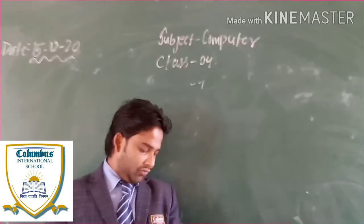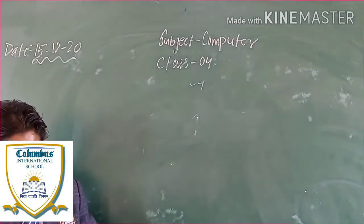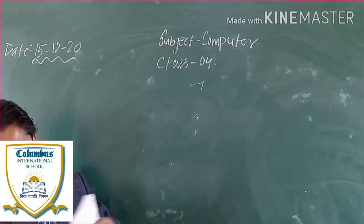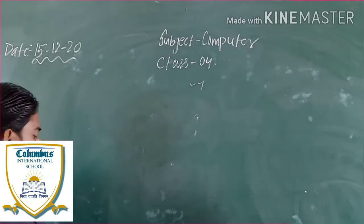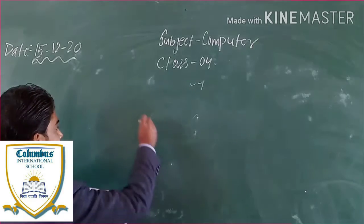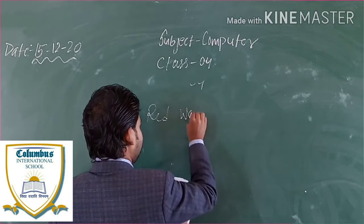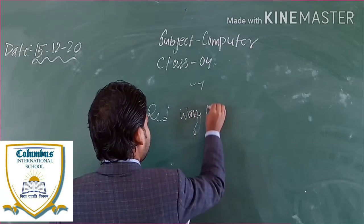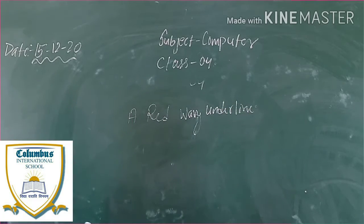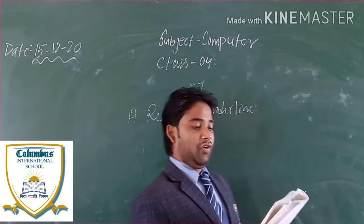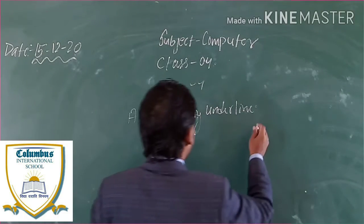You can turn on or off the red lines that appear under misspelled words. A red wavy underline indicates a misspelled word and a blue wavy underline indicates a grammatical error.